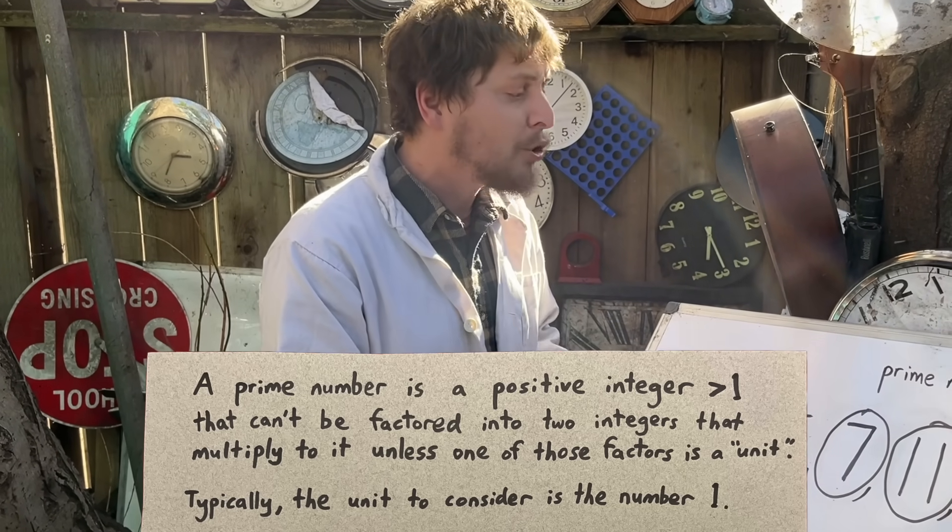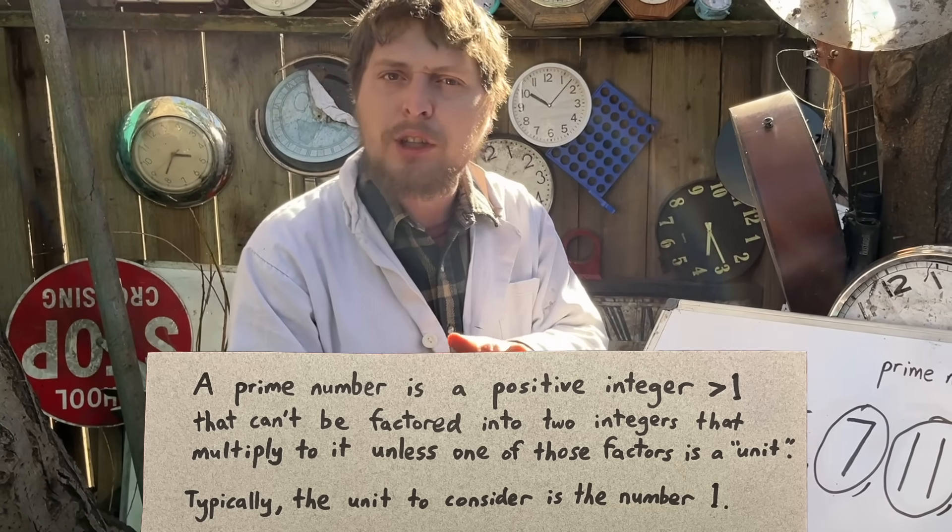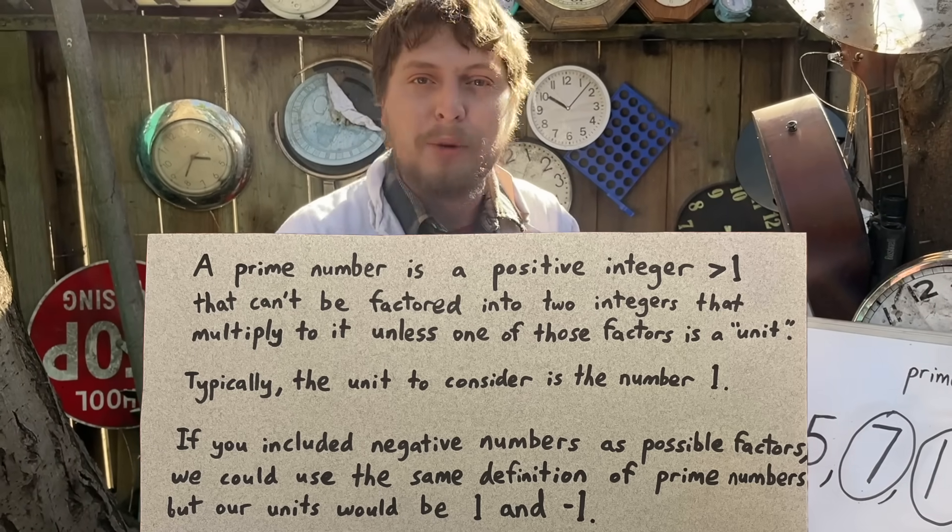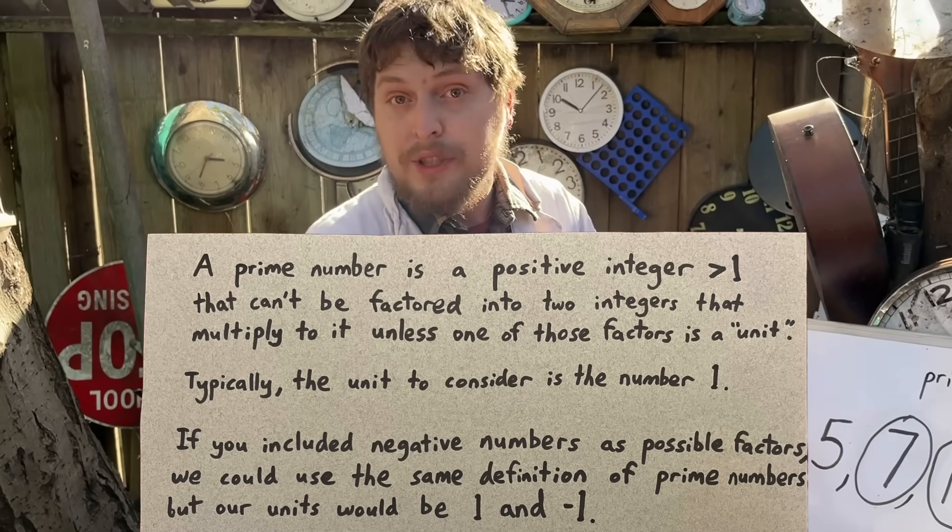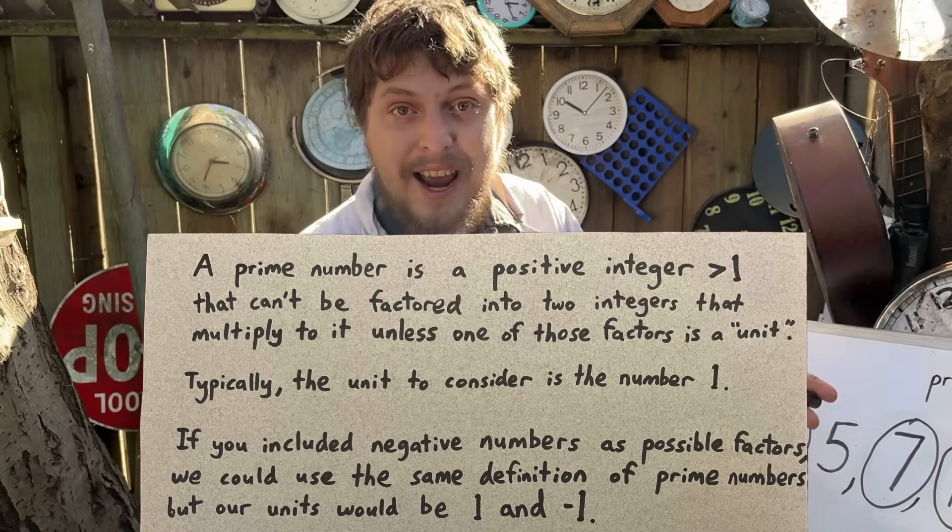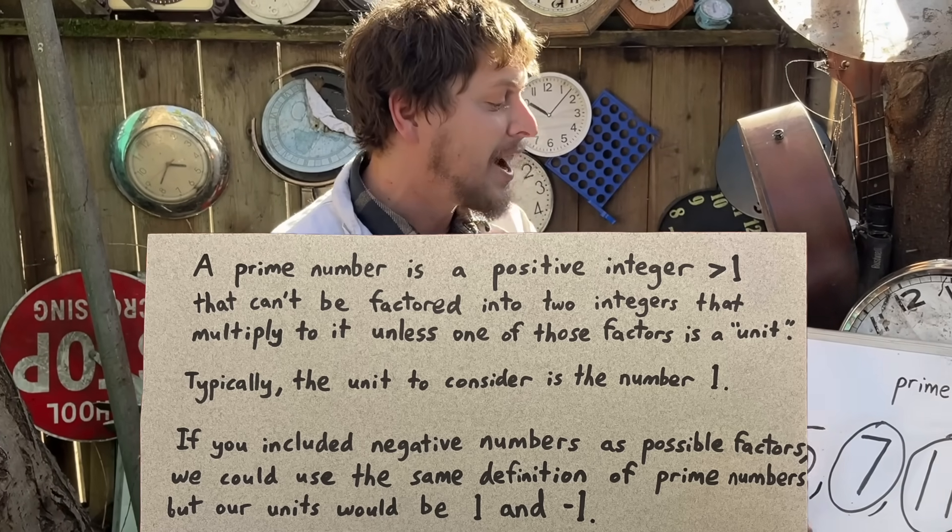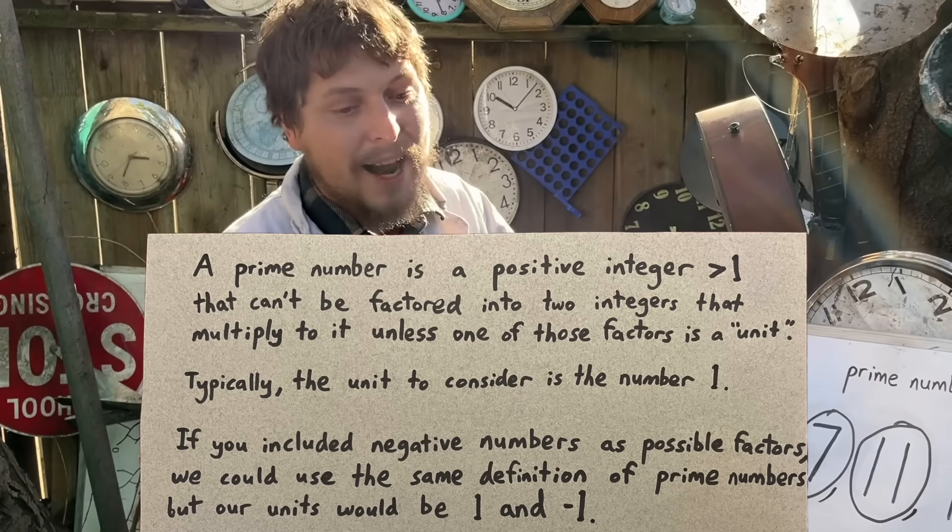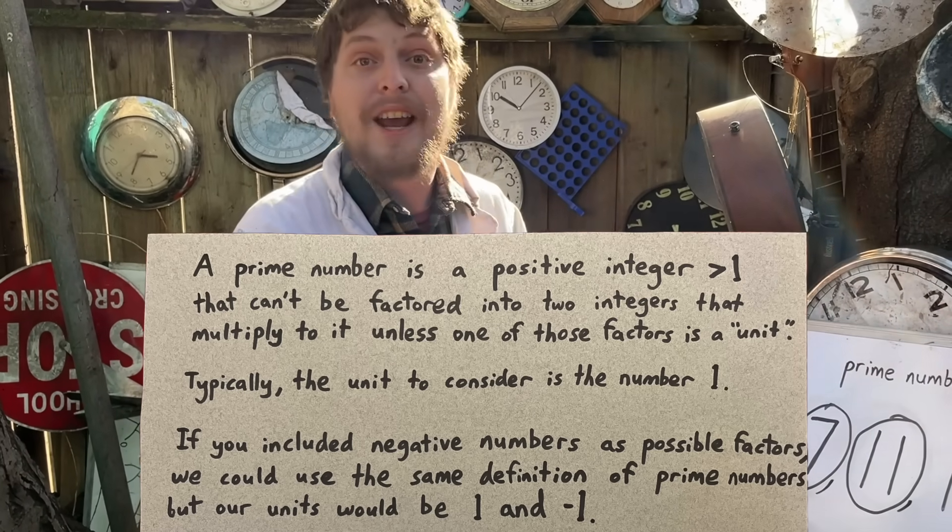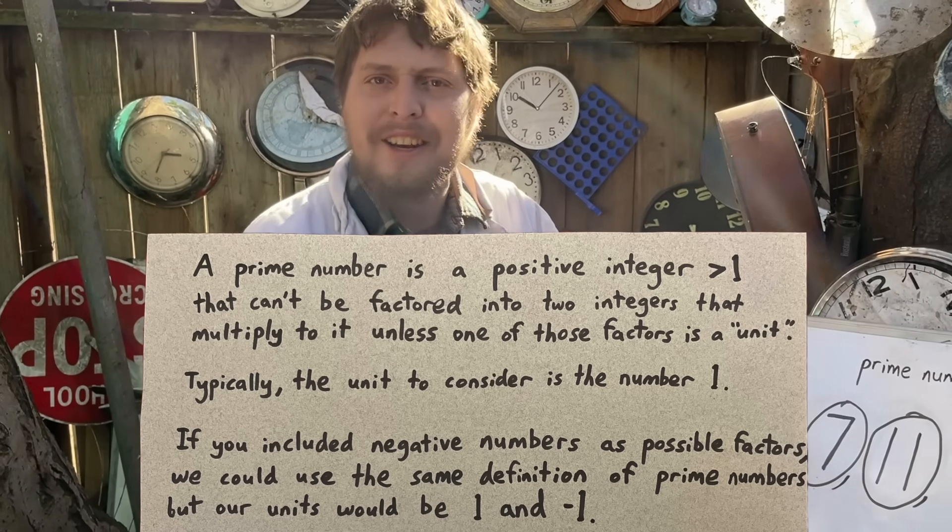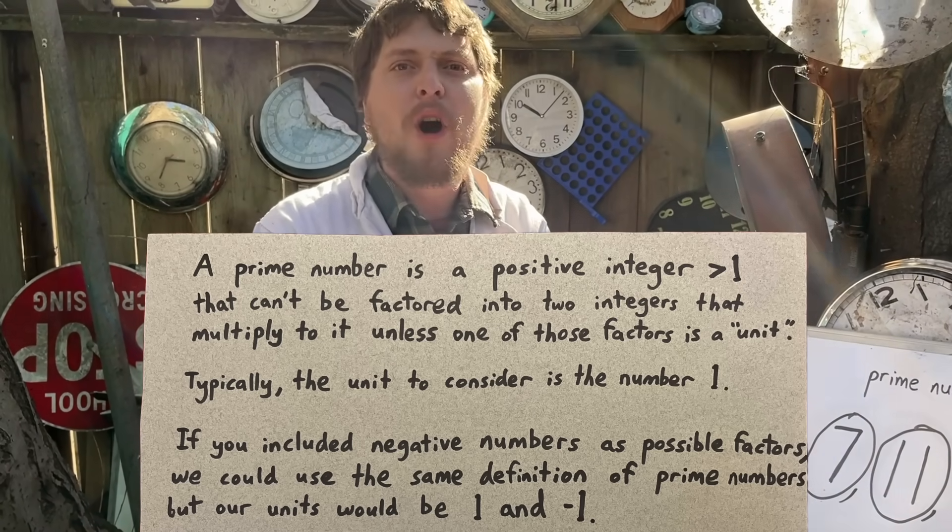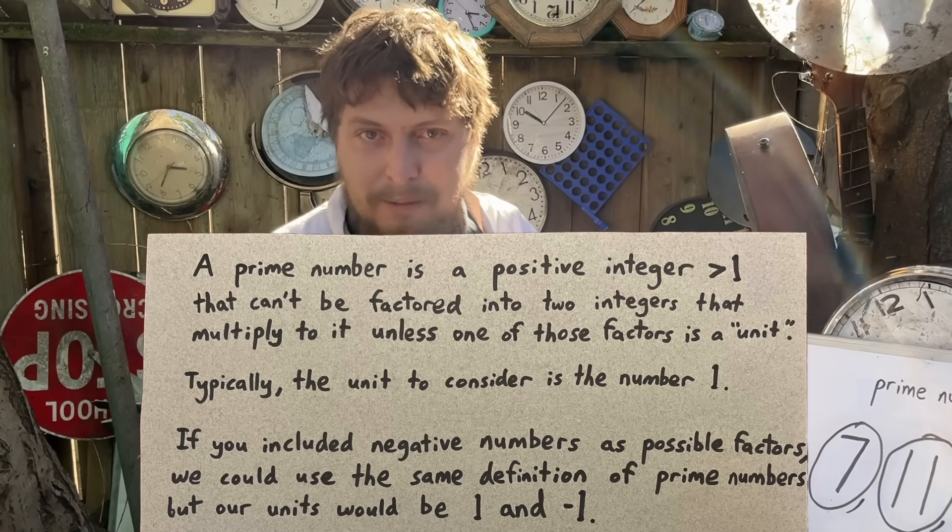Or we could define prime similarly, but include negative numbers as possible factors, and then we'd use the same definition, but say that primes can't have a factor pair that multiplies into them unless it contains one or negative one, which we can call units in this circumstance.